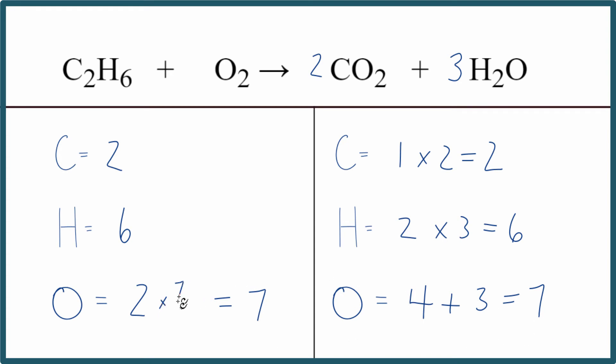Two times seven over two. When we multiply, the twos cancel out, we end up with seven.